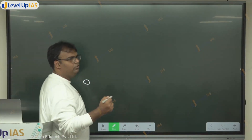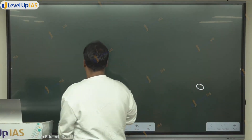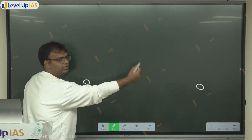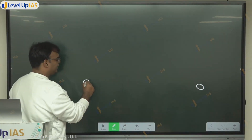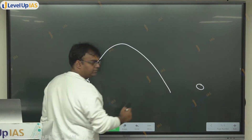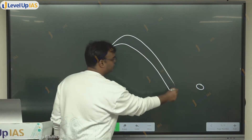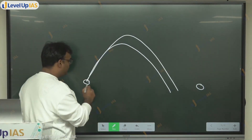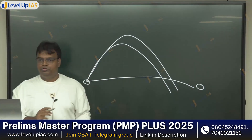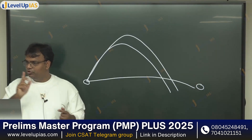A ballistic missile works on the principle of projectile motion. When you throw a stone at a particular speed and angle, it will reach a particular destination. If you throw it at a perfect angle and a particular speed, it goes like this and falls like this. If you increase the initial speed at the same angle, it perhaps goes further and falls like this. If you change the angle, it may go differently. So where the stone goes depends on what angle and what speed you initially launch it at.